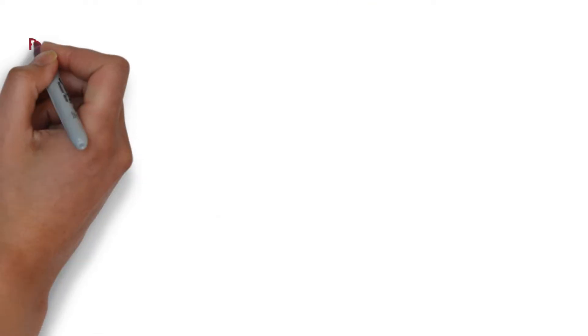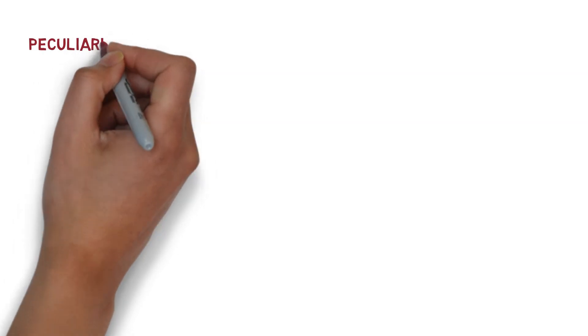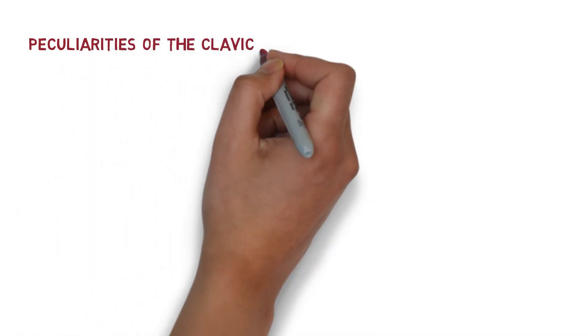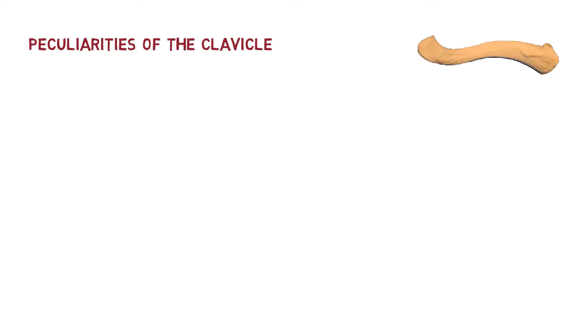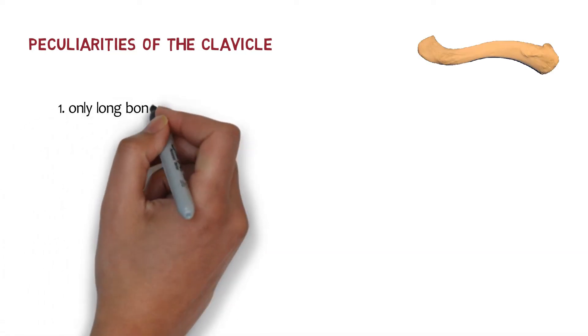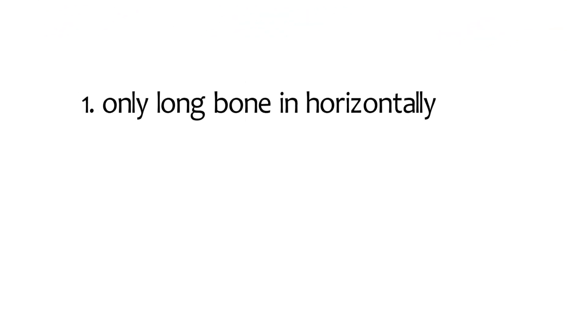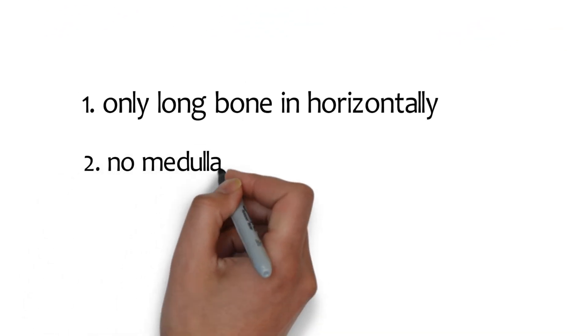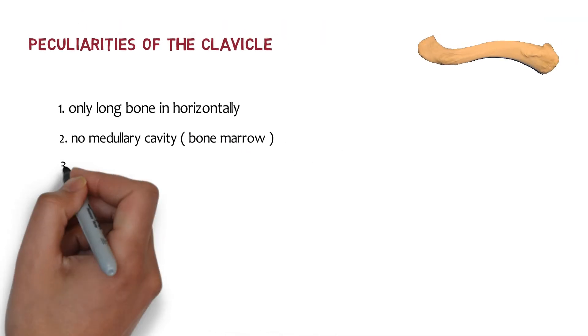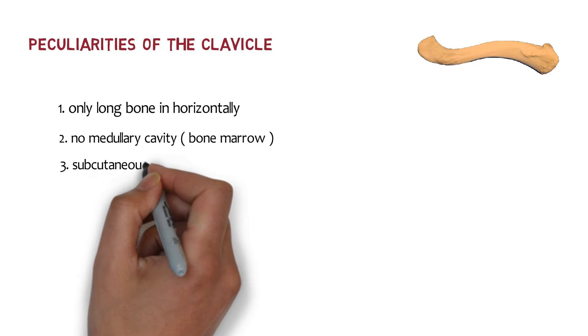Let's talk about the peculiar features of the clavicle. This is our topic of interest today. The first feature is it is the only long bone which lies horizontally. The second feature is it has absolutely no medullary cavity. And the third one is it is subcutaneous throughout its extent.